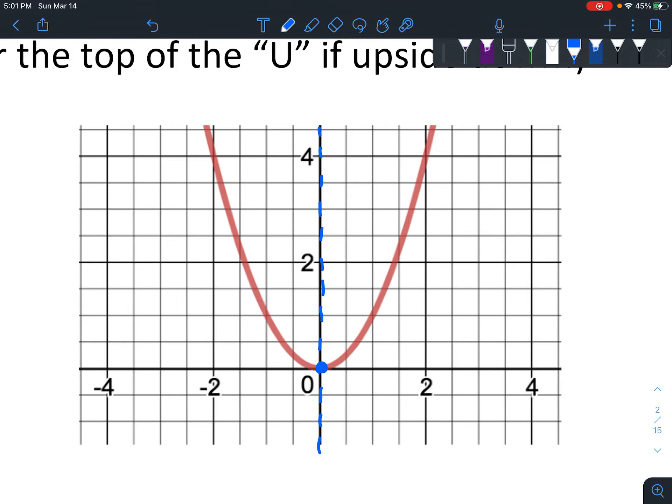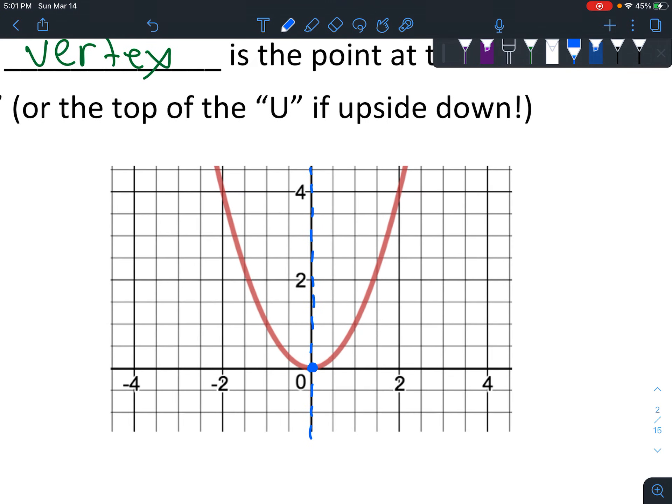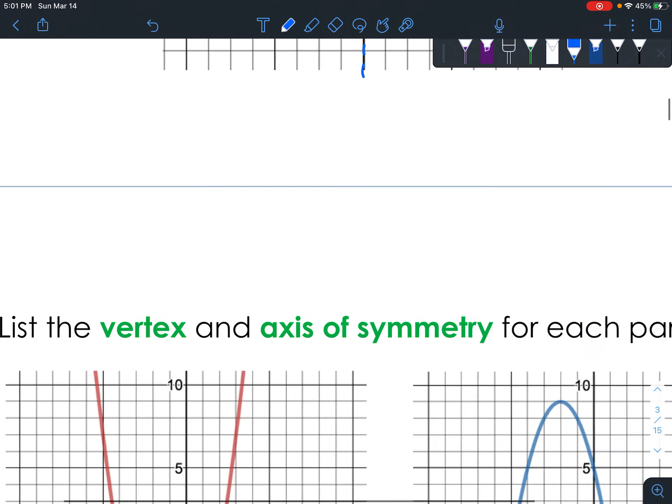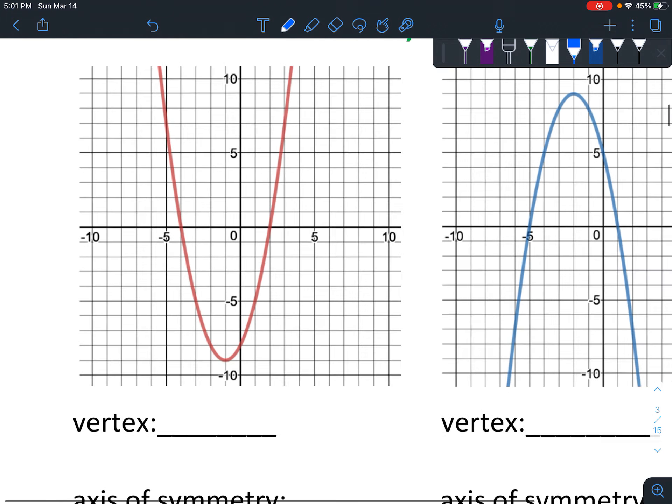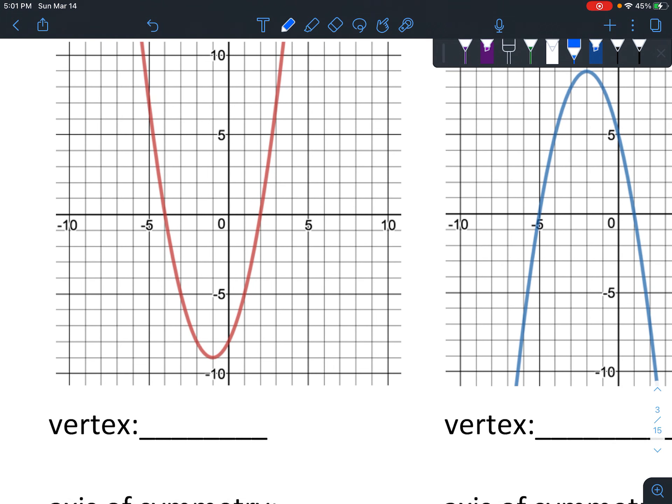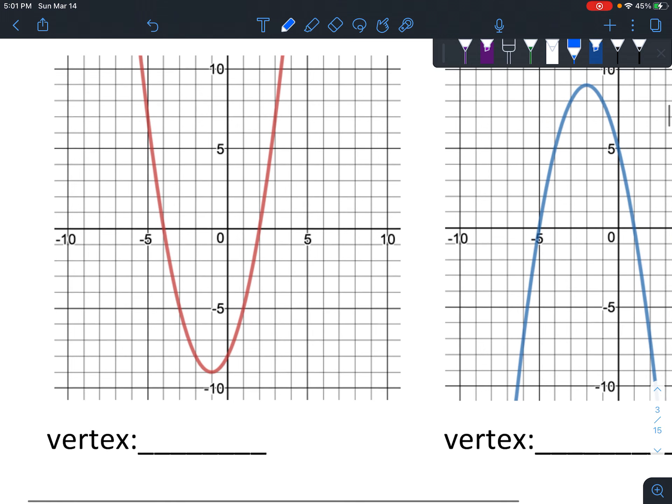And then the vertex would be right here, and so it's the very lowest point or the very highest point if it's upside down. Okay, and today we're just going to focus on the vertex and the axis of symmetry. You can actually find it visually, so we're not even dealing with equations today, just looking at it visually. So just imagine, go ahead and draw really quick a little dotted line going right down the center.